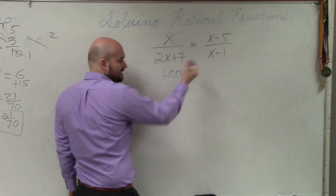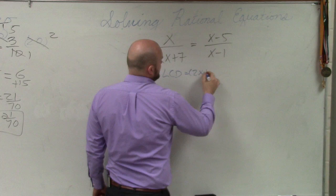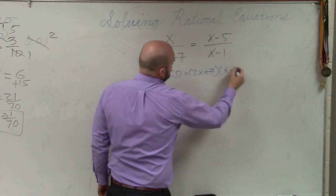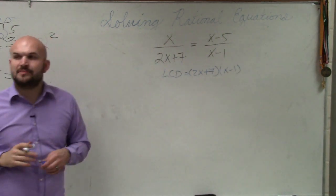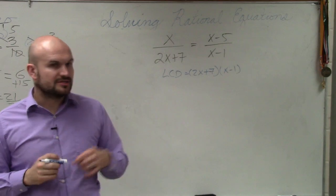So you find the LCD, in this case, is just going to be your product 2x plus 7 times x minus 1. You just take your product of your denominators when you have your expressions in your denominator.